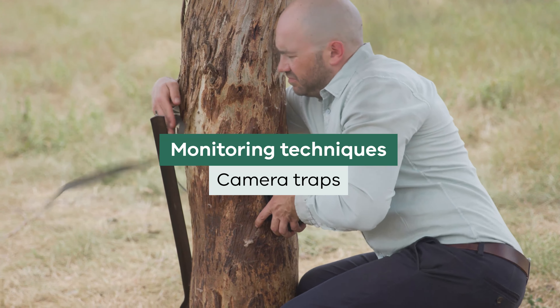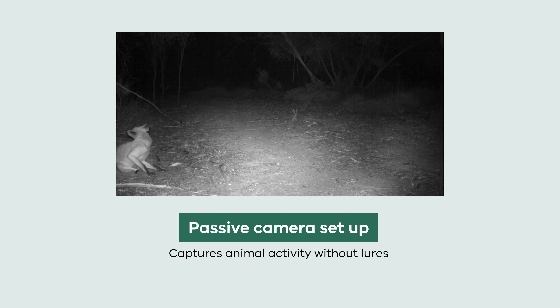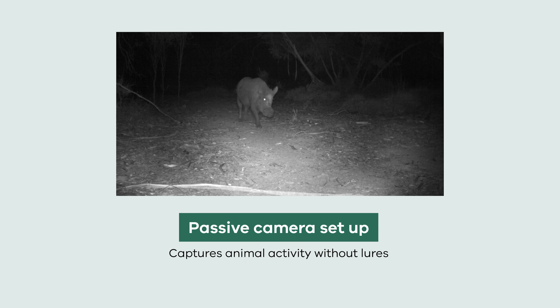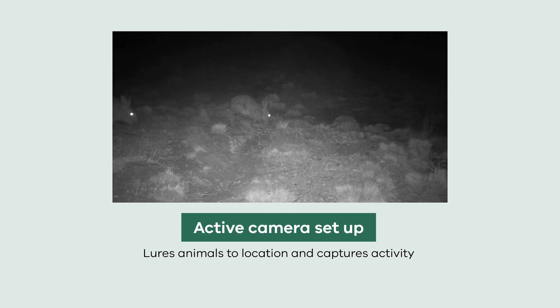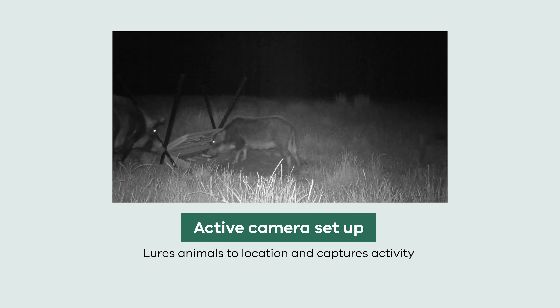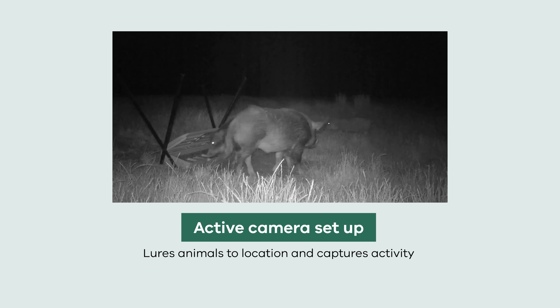Remote cameras can be used to monitor pest animal populations or to monitor control tools. There are a number of different cameras on the market — some can take video and some take stills — depending on the situation and what you're hoping to achieve. You can use a passive set, which tries to capture the animal moving naturally through the landscape and is generally used to get a count on population. Or you can use an active set, where you use a lure to bring an animal to a particular area — which can also be used for baiting programs.